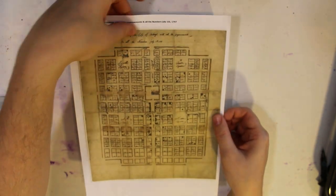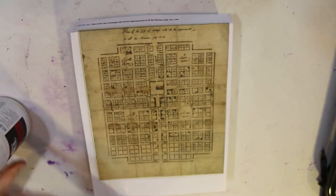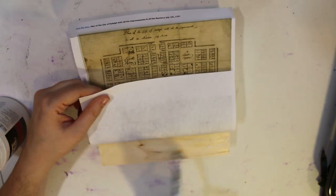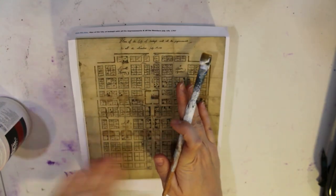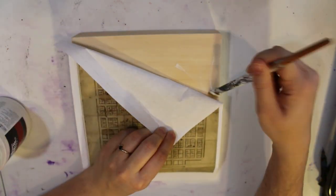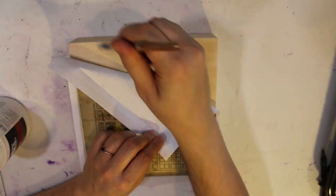This is a map of downtown Raleigh from, I believe, the late 1700s—kind of the first master plan of the city. What I did is I found it on an online library, downloaded it, and printed it off. I'm adhering it to my wood board because I want it to stay mounted to the bottom of my painting.